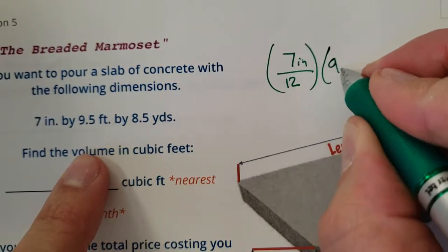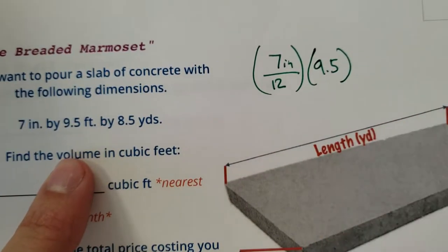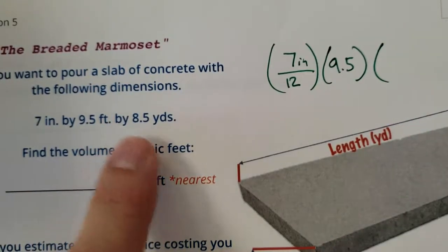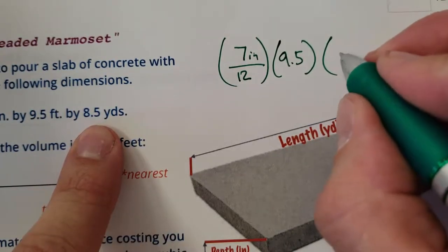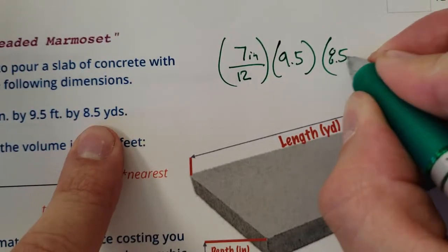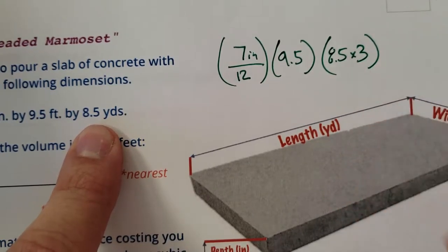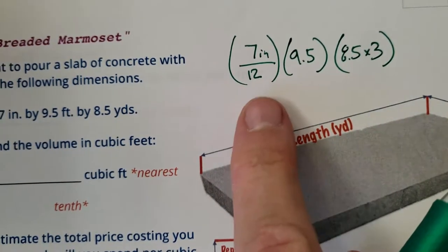Okay, 9.5 feet is already 9.5 feet. Here we go. All right, next thing I'm going to do, if I have 8.5 yards, I would have to take that times 3 to get the feet. So I'm going to go 8.5 times 3. There we go. So I've written out the conversions.